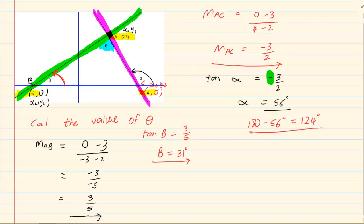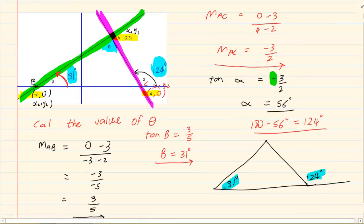Now let us see what we have. We have this beta which is equal to 31 degrees. We have that alpha is equal to 124 degrees. 31, 124, look at the shape you have. You have 31 degrees, you have 124 degrees. This is a grade 9 rule. The exterior angle is equal to the sum of the interior opposite angles.